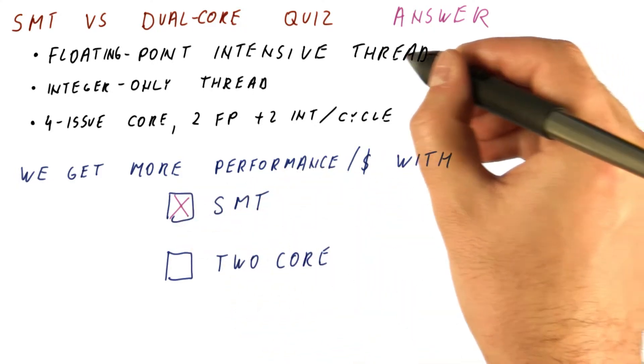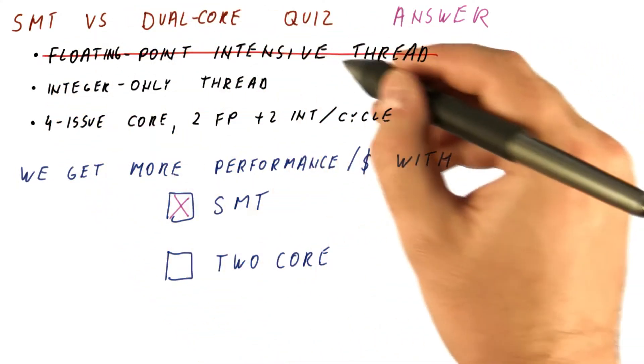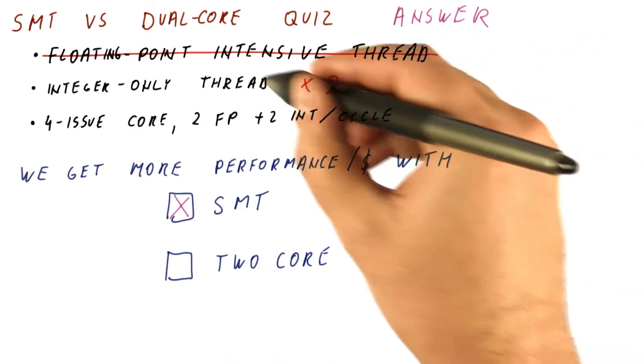Now, what would happen if we didn't have a floating point intensive thread and instead got two of these?